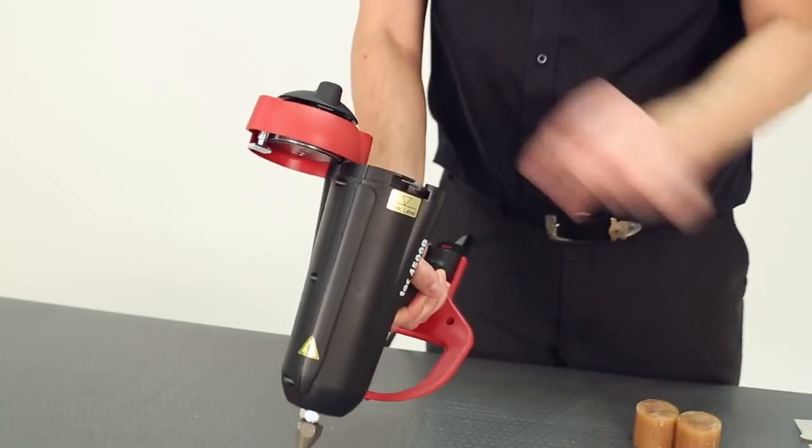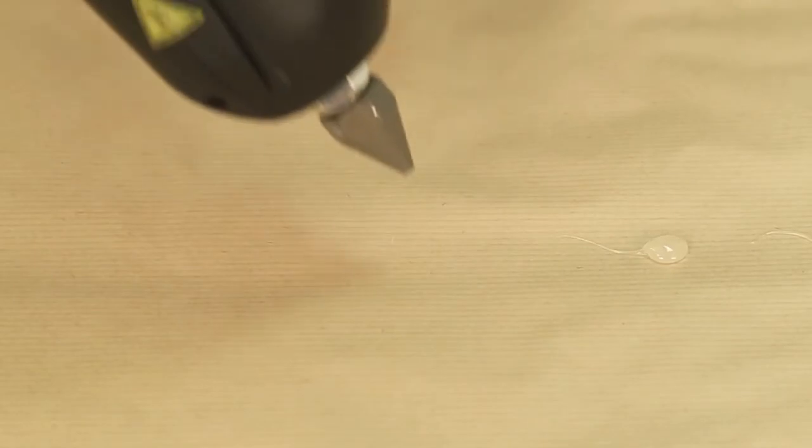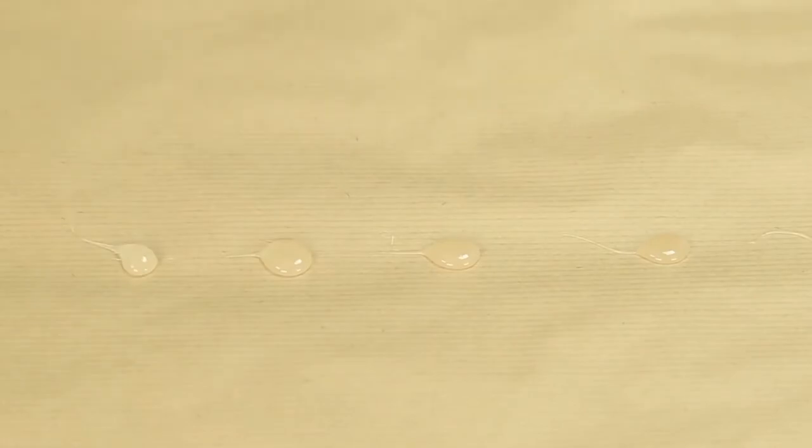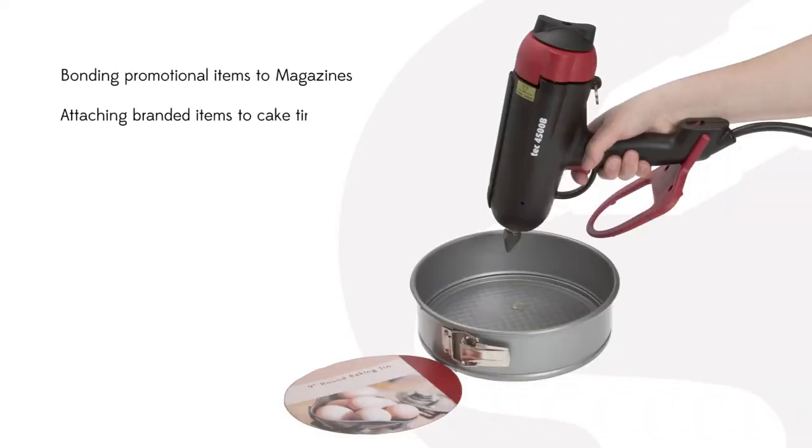Offering reliability and user comfort, the TEC 4500 ensures effortless work for the operator. The versatility of the TEC 4500B makes it ideal for a range of bead applications, including attaching promotional products to magazines or bonding branded cards to things like baking trays.